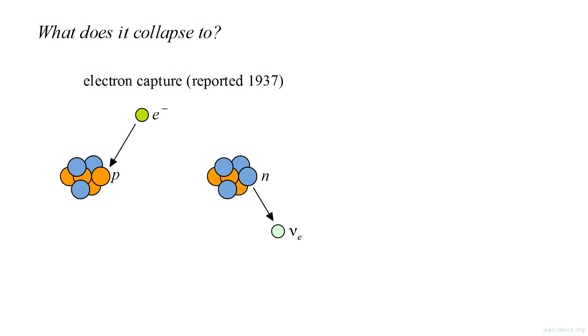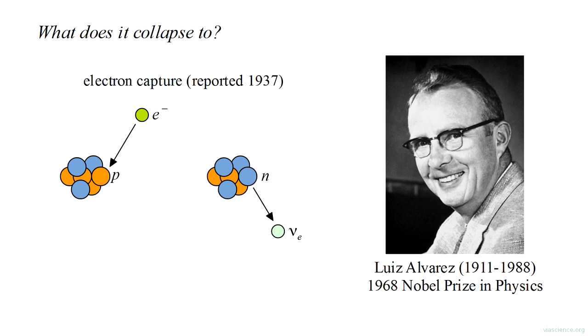But what does it collapse to? The answer is not necessarily a black hole. By the 1930s a theoretical picture of nuclear physics was emerging. Nuclei were known to contain protons and neutrons. It was thought possible that under certain conditions an electron could be captured by a nucleus, converting one of the protons to a neutron with the emission of a neutrino. This process of electron capture was observed and reported in 1937 by Luis Alvarez. The implication was that in a collapsing star all electrons and protons might combine in this manner, leaving an object composed of nothing but neutrons, what we now call a neutron star.